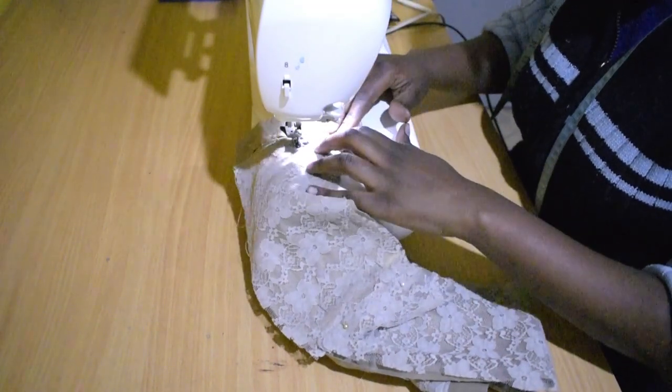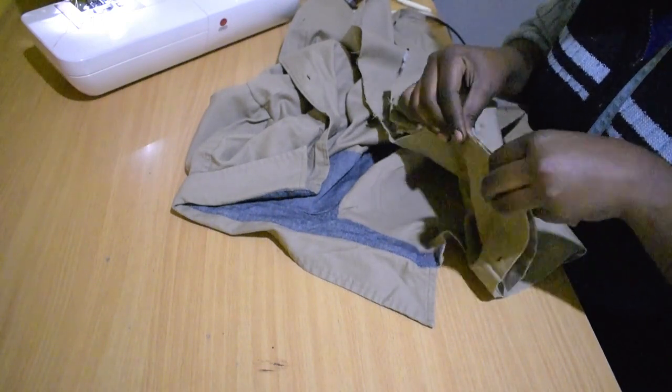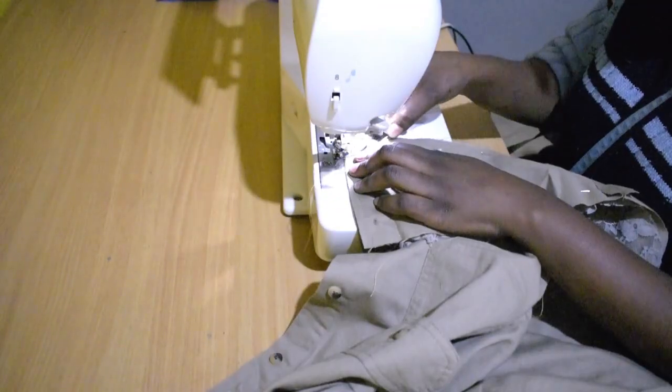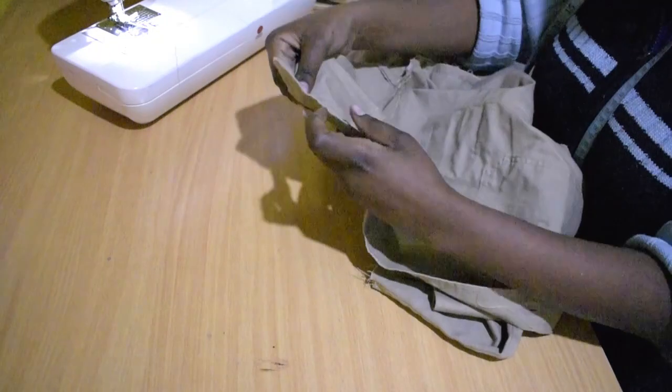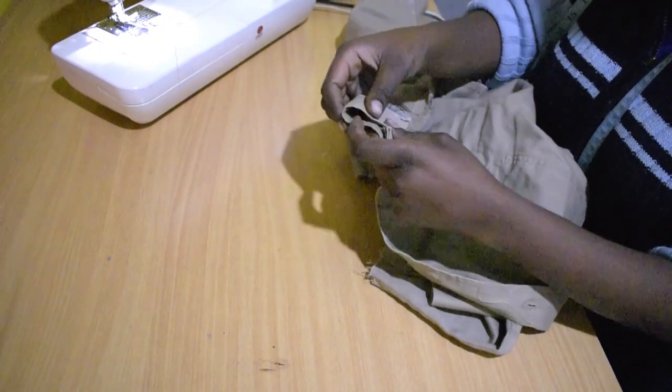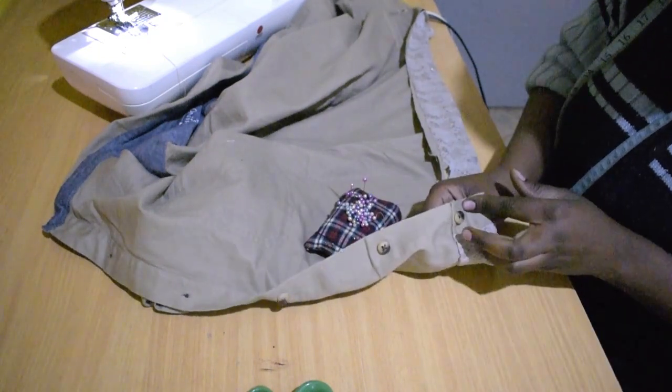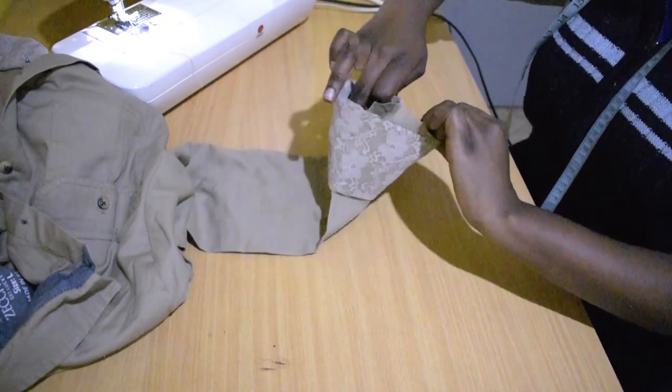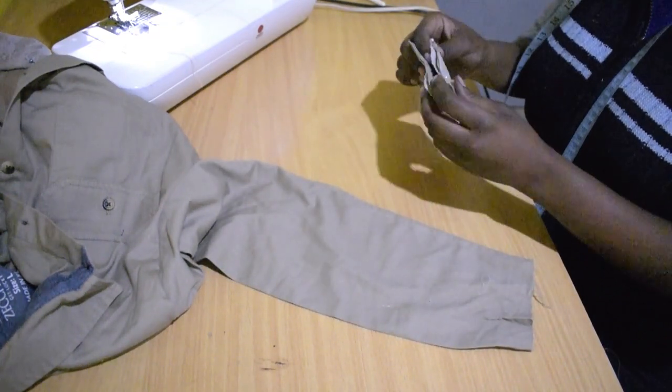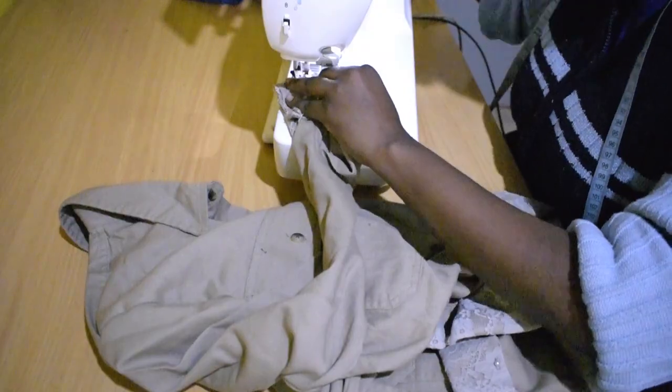I then stitch that bottom part to keep it in place. Then join the bottom piece to the main shirt and stitch. Fold it again then pin it and stitch. I used hand stitching for this part because I didn't want the stitches to show on the other side. This is how we'll join the cuff to the sleeve. That is it. Iron it and you're done.